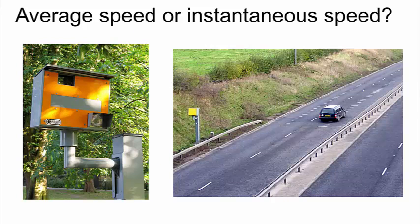Another example of where average speed and instantaneous speed are relevant is with speed cameras. Speed cameras are triggered by detecting the instantaneous speed of a car that is passing it using a radar gun. If the speed camera thinks that the car is driving over the speed limit, it will trigger two photographs being taken a short time apart. The markings on the road allow us to measure how far the car has moved in the time between these photographs, and therefore to work out the average speed of the car as it drove through the speed camera zone. So the speed camera is triggered by instantaneous speed, but the evidence provided by the speed camera records the average speed.